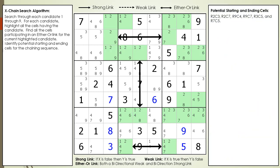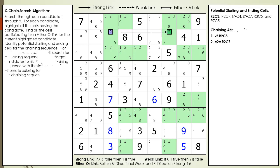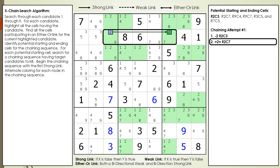We identify all the potential starting and ending cells in our chaining sequence. Next, we choose cell 2, 3 as our starting cell in our first attempt to create a chaining sequence. We also add the first strong link to begin the chaining sequence as shown.